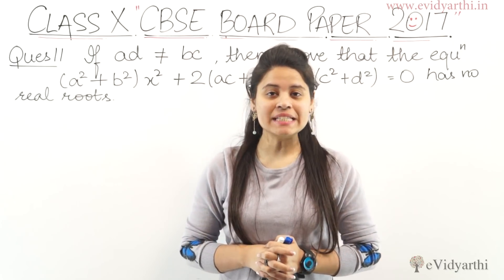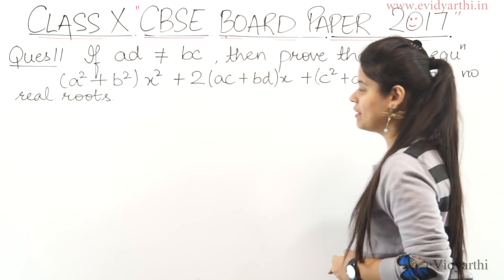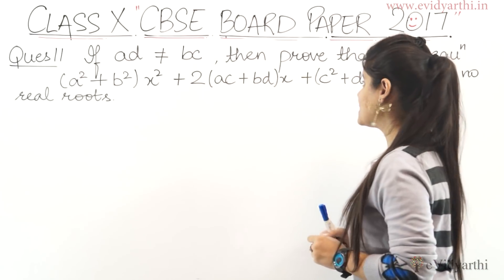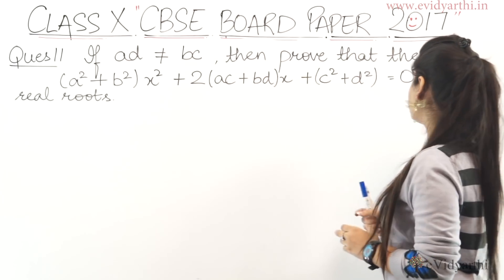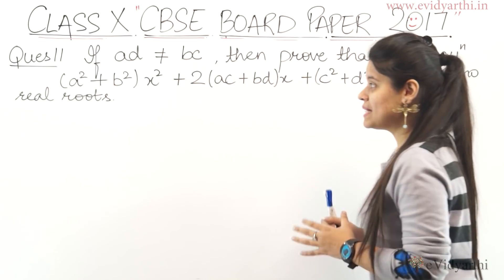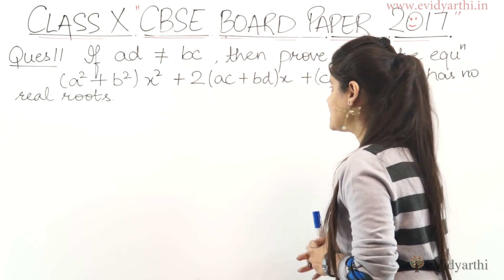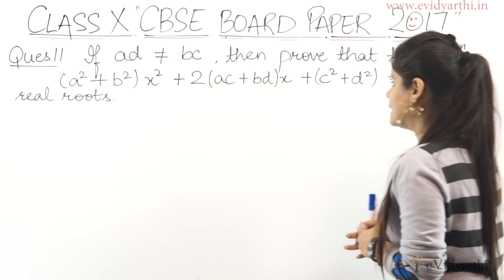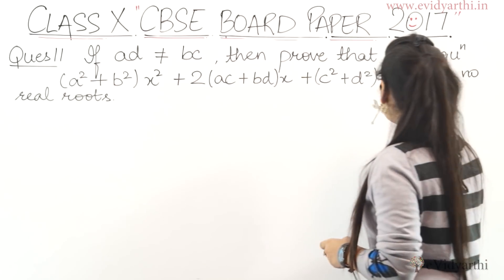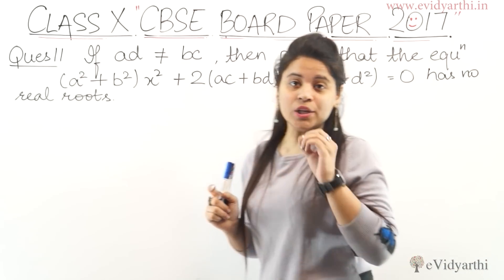We are beginning with Section C. This is question number 11. If AD is not equal to BC, then prove that the equation (A² + B²)x² + 2(AC + BD)x + (C² + D²) = 0 has no real root.